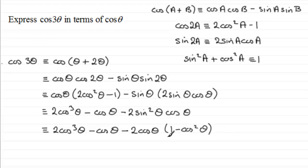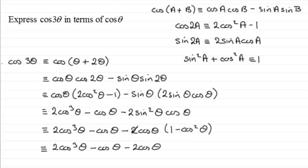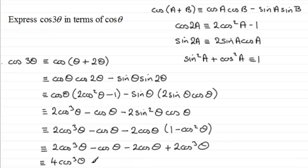Now we just expand and group like terms. We have 2cos³θ − cosθ, and expanding −2cosθ·(1 − cos²θ) gives −2cosθ + 2cos³θ. Grouping: 2cos³θ + 2cos³θ = 4cos³θ, and −cosθ − 2cosθ = −3cosθ. So the final result is cos(3θ) = 4cos³θ − 3cosθ.